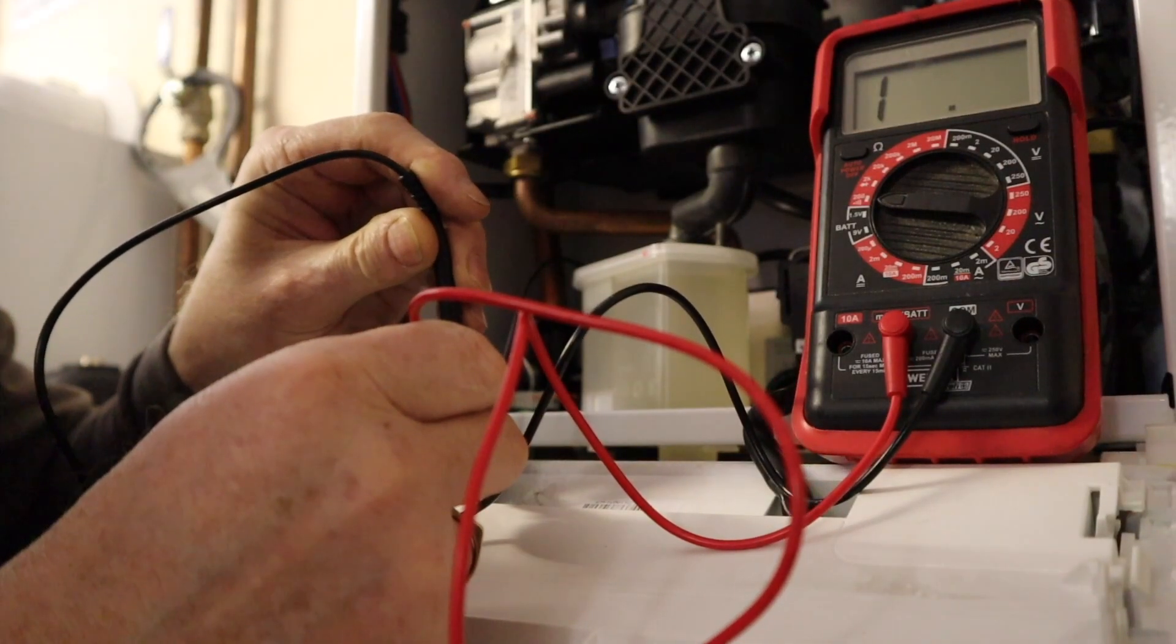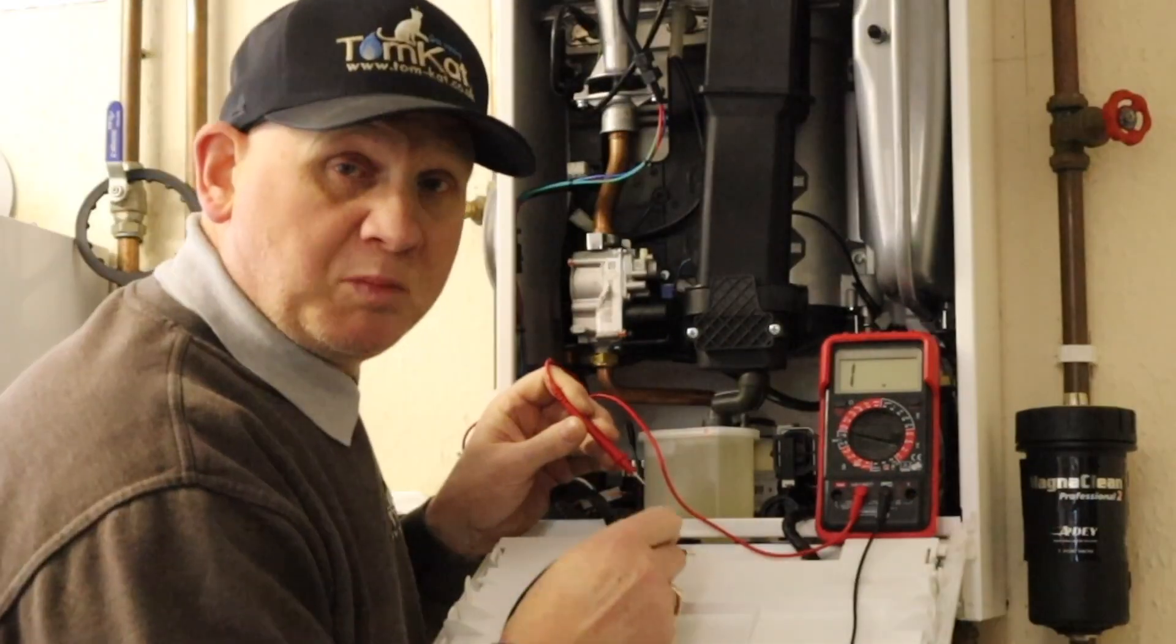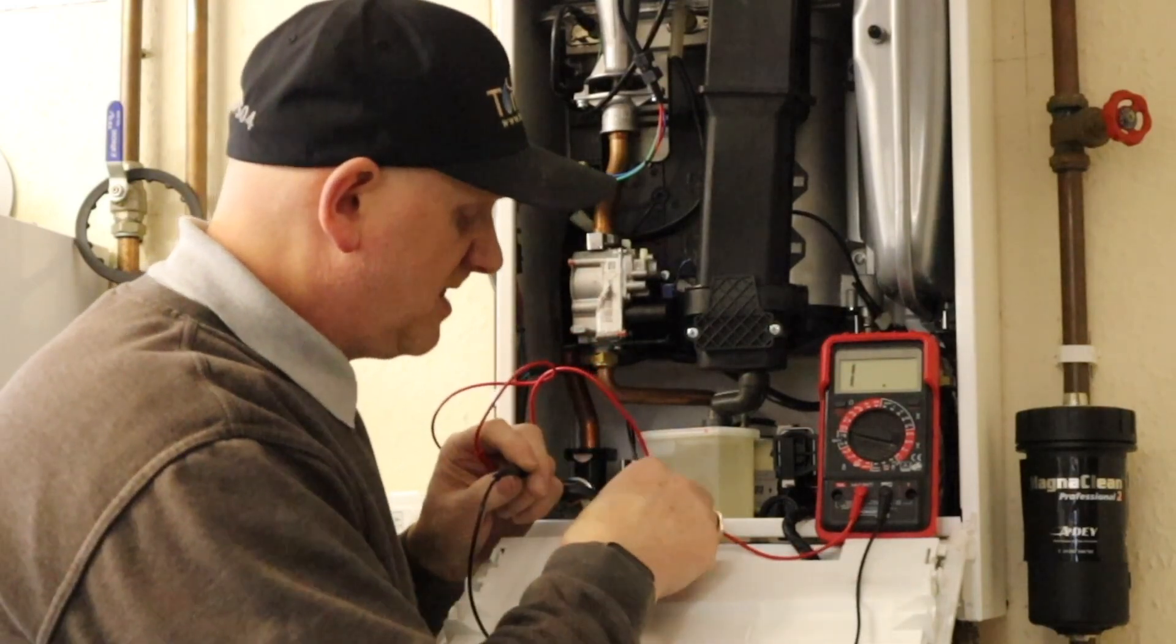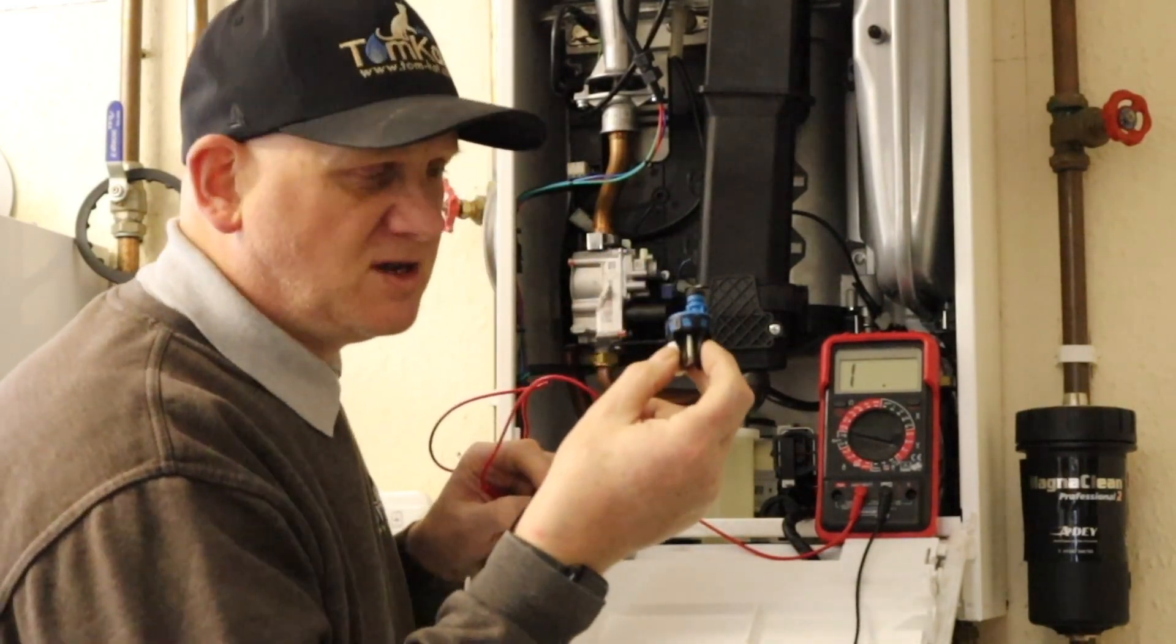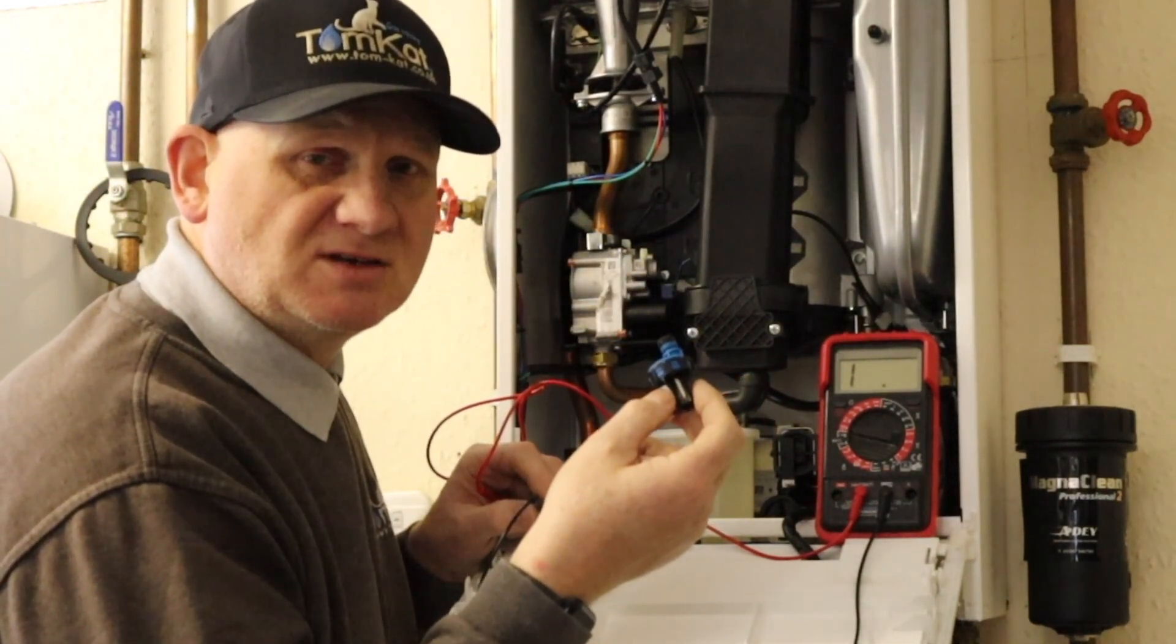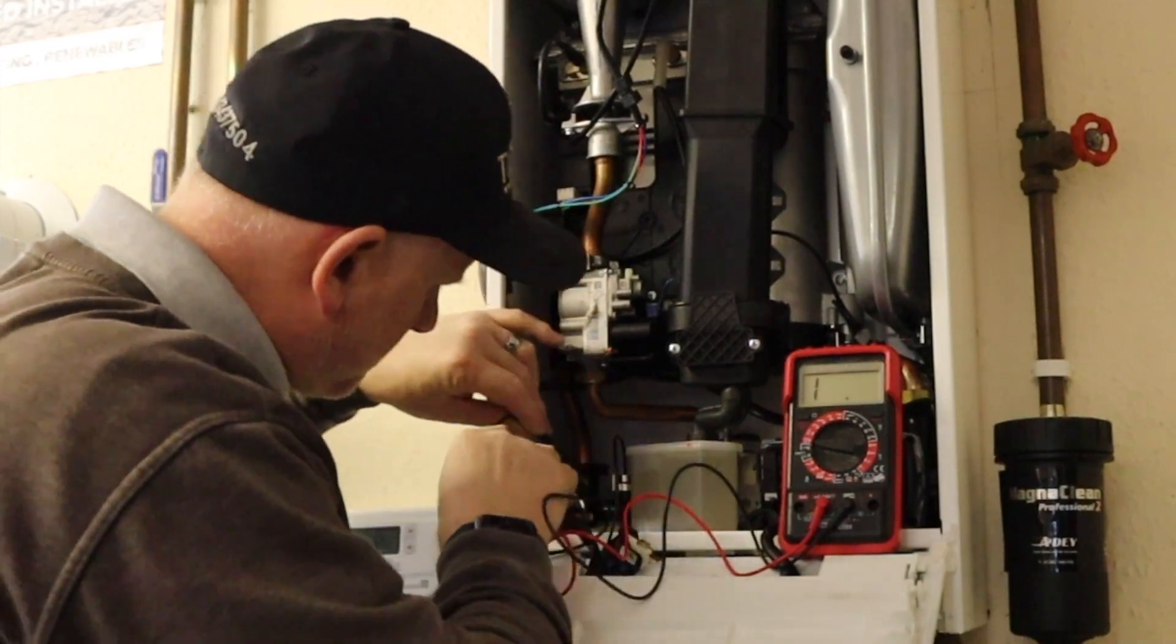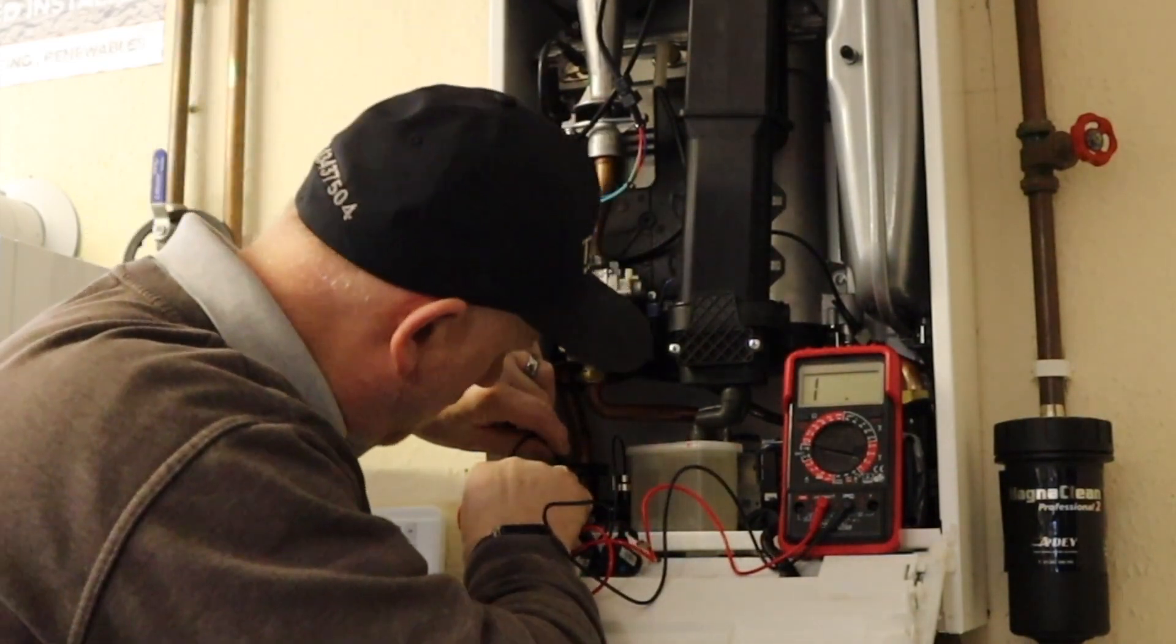But if you go on to the two connectors and you do actually get a reading, that means this is stuck in the closed position. So the boiler thinks there's water in there and there actually isn't. Now obviously the power's off on this boiler. If I remove these two cables and do the same thing on here, we should get less than 1 ohm.